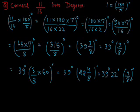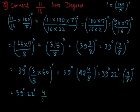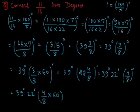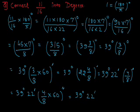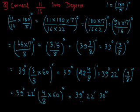Since 4 by 8 minutes is less than 1 minute, we convert it to seconds. We know 1 minute equals 60 seconds, so 4 by 8 minutes equals 4 by 8 into 60 seconds. This simplifies to 1 by 2 into 60 equals 30 seconds. Therefore, 11 by 16 radians equals 39 degrees 22 minutes 30 seconds.